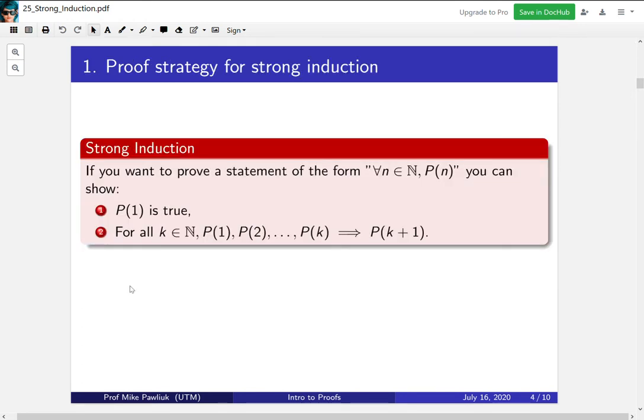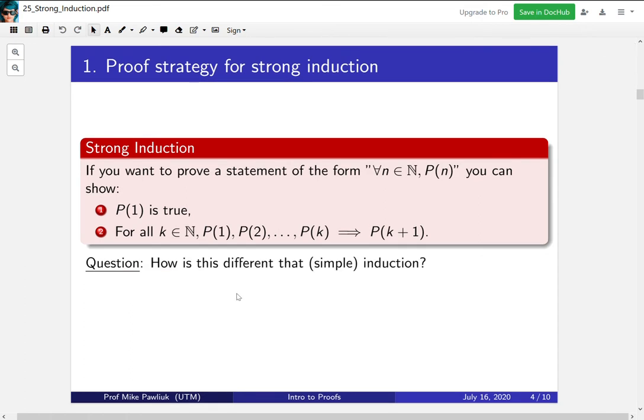Here's the proof strategy for strong induction. If you want to prove a statement of the form for all natural numbers n, P(n), you can show P(1) is true, and then for all k, if you assume P(1), P(2), all the way up to P(k), then that implies P(k+1).